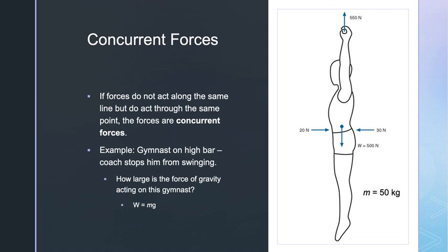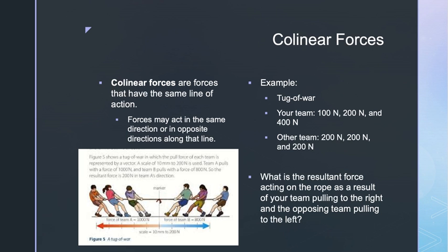In the tug-of-war photo, all forces have already been added together. Team A is pulling to the left with 1,000 Newtons (assigned a negative value). Team B is pulling to the right with 800 Newtons (a positive value). The resultant force is 800 Newtons minus 1,000 Newtons equals negative 200 Newtons, or 200 Newtons in the left direction. We could say that Team A is winning based on these force application values.